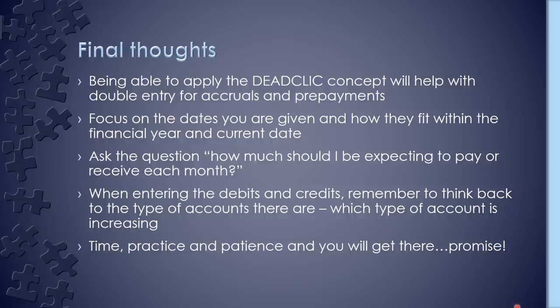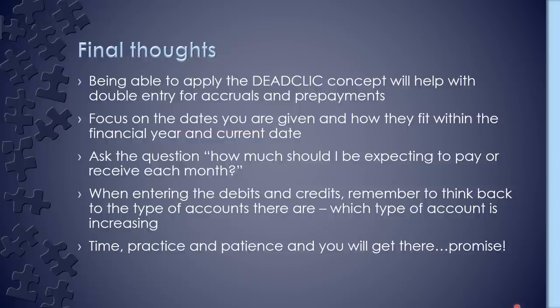Focus on the dates given in the question — what's your transaction date and how does it fit within the financial year? Draw out your little timeline, identify the overlap, so you know what's fine to sit in that year and what needs to be accrued or prepaid. Also ask: how much should you expect to pay or receive each month? That breaks the contract down — £3,600 for six months means £600 per month — and it helps you sense-check your answers.